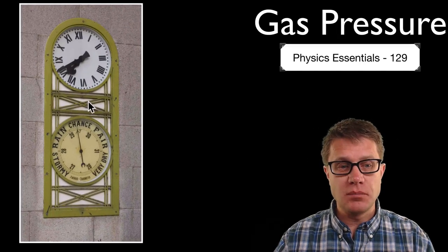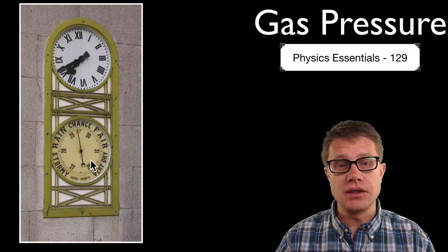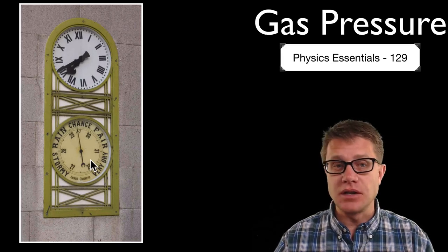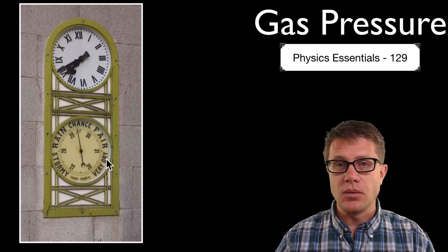This clock to the left is measuring time. But on the bottom it is measuring air pressure, which would be gas pressure in the atmosphere itself. What is interesting is as it decreases we get stormy weather. As it increases we get dry weather. Why is that?